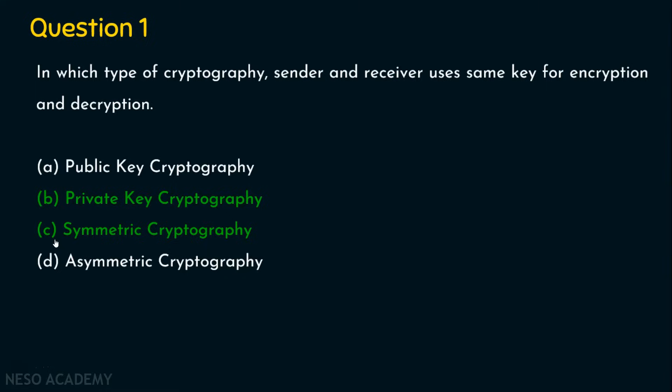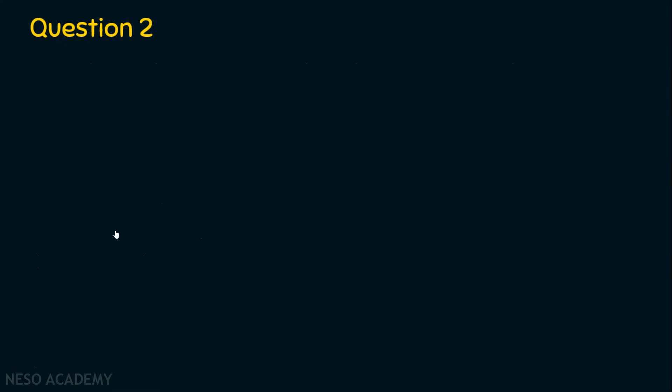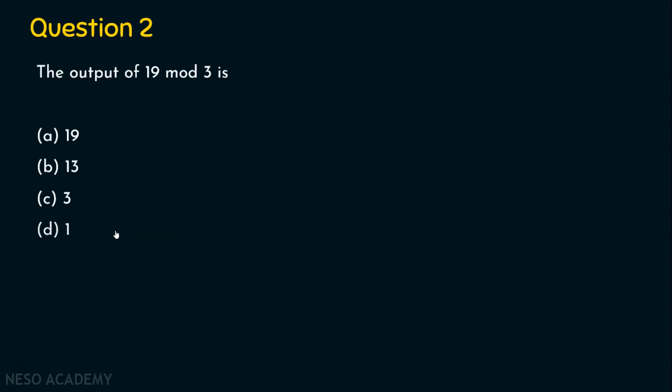Let's now move on to question number 2. The question is: the output of 19 mod 3 is? The options are: Option A, 19. Option B, 13. Option C, 3. And Option D, 1.